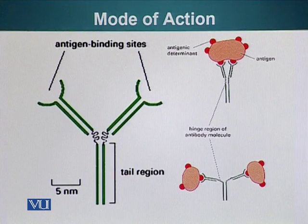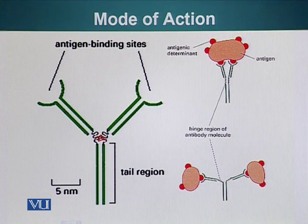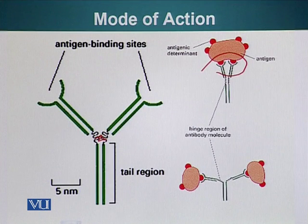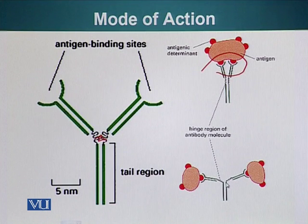Here we can see an antibody with a hinge region that gives it flexibility. Because of the flexibility of the hinge region, the antibody can bind antigenic determinants. If they are close together, the hinge will move, allowing the two antigen binding sites to move closer and bind a polyvalent antigen, or allow the antibody to bind two proteins which have antigenic determinants for this particular antibody. This flexibility increases the ability of our antibodies to bind different antigens.